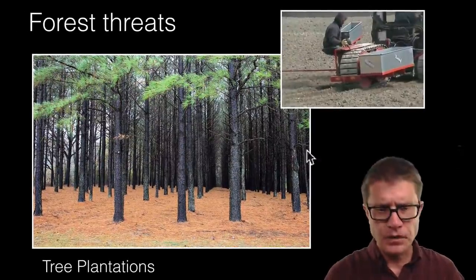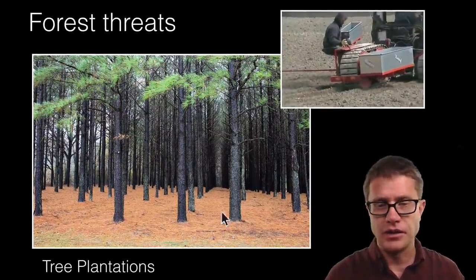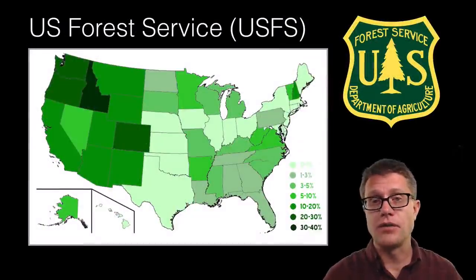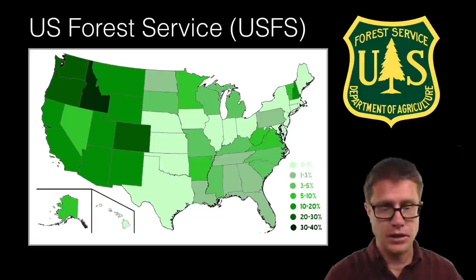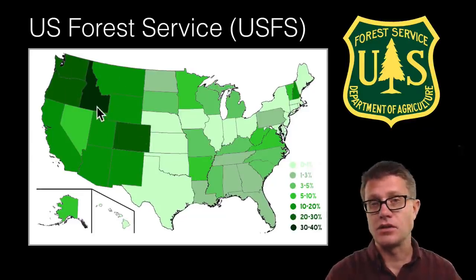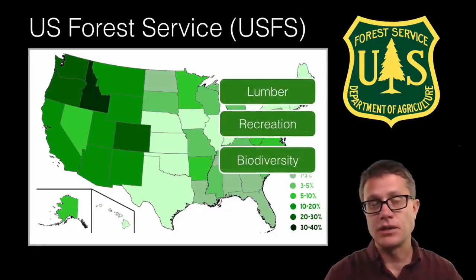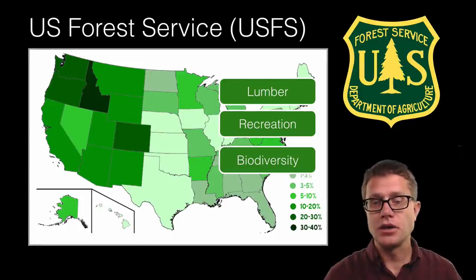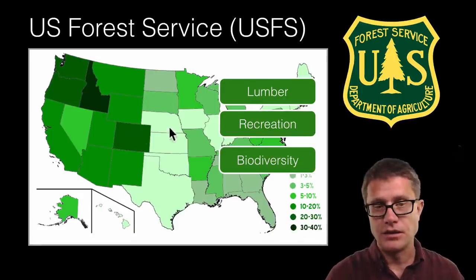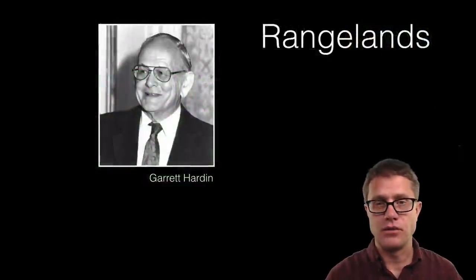Tree plantations — recognizable because all the trees are planted in straight rows — are a great way to harvest lumber but are not great for forest biodiversity. A lot of forests are publicly owned. Looking at the US Forest Service, in certain states especially out west, a high percentage of land is in national forests. Their goal is to protect lumber, recreation, and biodiversity. Some people would say they do all three, but maybe in that order — with not enough emphasis on protecting biodiversity.